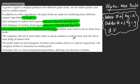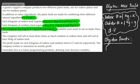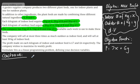Let's write the objective function. The profit is £7 for every kilogram of indoor feed and £6 for every kilogram of outdoor feed. So the objective function is P equals 7x plus 6y, and we're looking to maximise this, subject to constraints. You might want to draw a table, but I prefer to pick up the information and go straight at it.